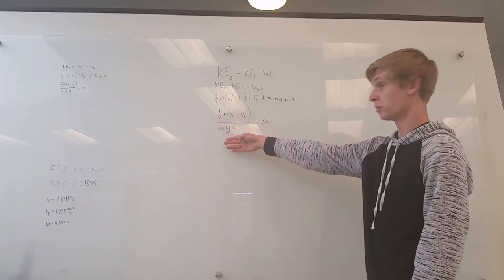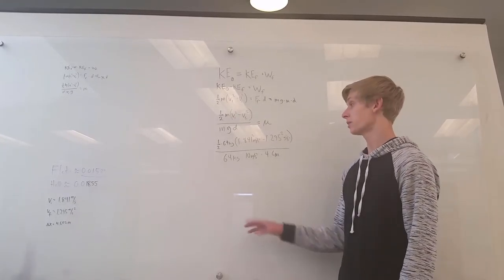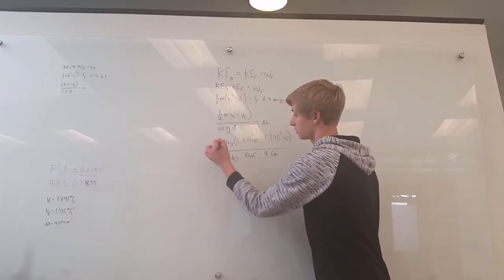This equation should be mu. I should have done this in the previous step, but the mass has cancelled, so we can get rid of these 64 kilograms.